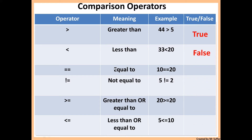Then we have the equal to, which is one of the most important ones in if statements. The equal to operator uses a double equal sign and means that two things are exactly the same as each other. This could be a name that is exactly the same as another name, or a number. For example, is Tom equal to Tom? That would be true. Is Tom equal to Alex? That would be false. So 10 equal to 20 is false because they're two different numbers, but 10 equal to 10 would be true.